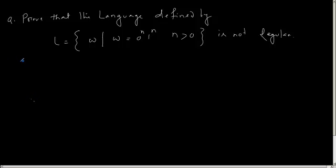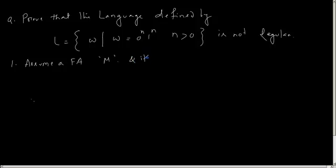Prove that the language L defined as the set of strings w of the form 0 to the power n and 1 to the power n, where n is greater than 0, is not regular. There are certain steps to prove that a given language is not regular using the pumping lemma. The first step is to assume a finite automata that accepts this language. We will prove by contradiction — we assume the language is regular and all its strings are accepted by a finite automata M which has k states.